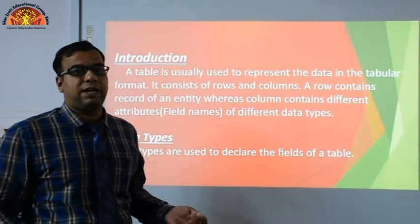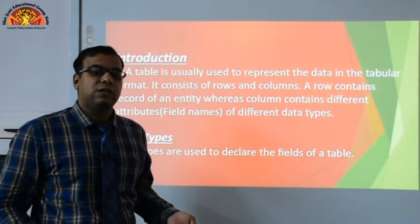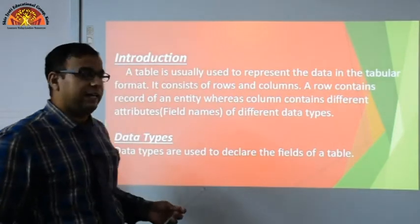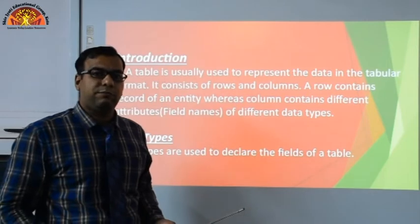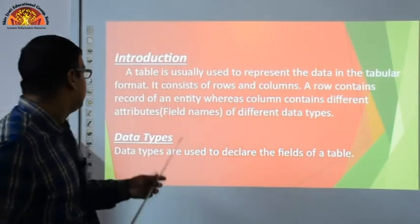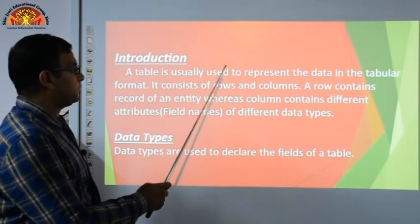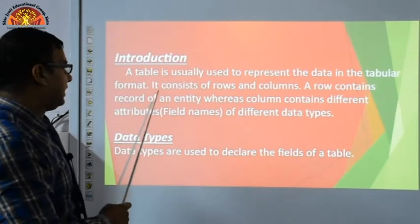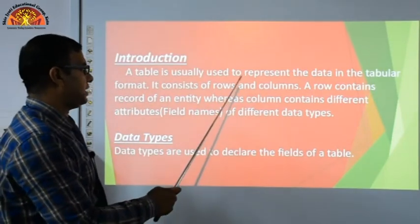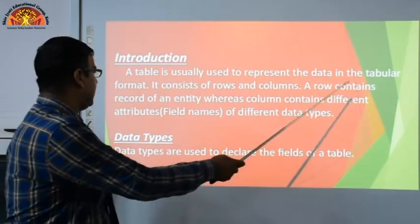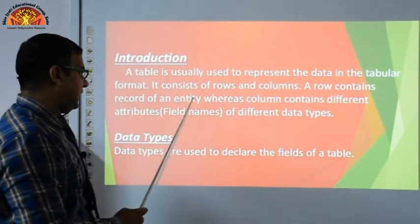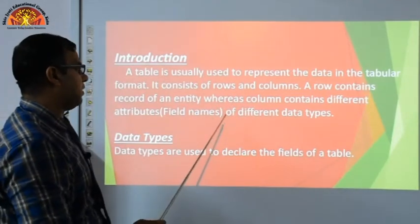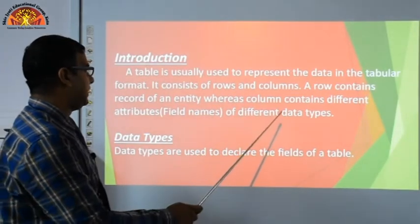MS Access is used to represent data in tabular format. It consists of rows and columns. A row contains records of an entity, whereas a column contains different attributes — field names of different data types.